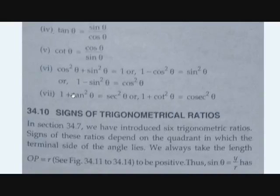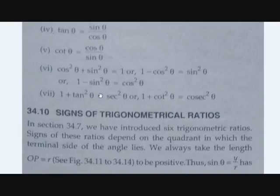From this we can also write sin squared theta equals 1 minus cos squared theta, and cos squared theta equals 1 minus sin squared theta. The next identity is 1 plus tan squared theta equals secant squared theta, or equivalently secant squared theta minus tan squared theta equals 1. Since secant squared theta is 1 by cos squared theta and tan squared theta is sin squared theta by cos squared theta, subtracting gives 1 minus sin squared theta over cos squared theta, which equals cos squared theta over cos squared theta, which is 1.